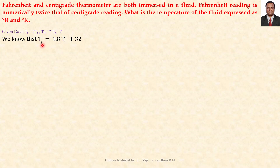We know that the Fahrenheit scale is given by the equation: F = 1.8 × C + 32, which allows us to identify the Fahrenheit temperature if we know the centigrade temperature. This expression was discussed in the previous YouTube sessions.